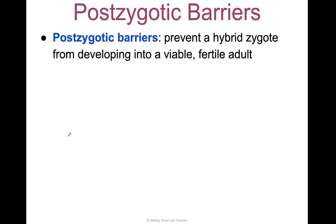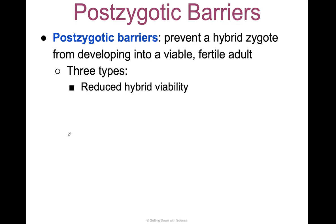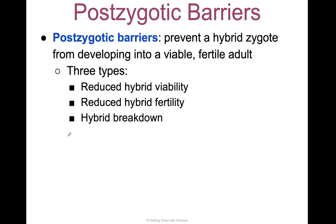Postzygotic barriers come into play after mating has happened. These barriers prevent a hybrid zygote from developing into a viable, fertile adult. There are three types: reduced hybrid viability, reduced hybrid fertility, and hybrid breakdown.